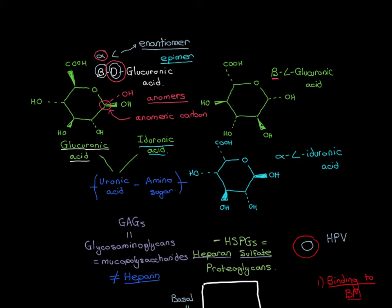We've been through some examples of uronic acid sugars — the two major examples being glucuronic acid, by which we strictly mean beta-D glucuronic acid, and iduronic acid, by which we strictly mean alpha-L iduronic acid. However, these two forms are the major forms of these molecules, and therefore we often just call them by these shorter names.